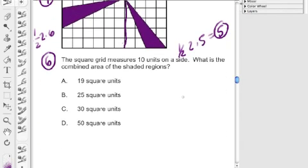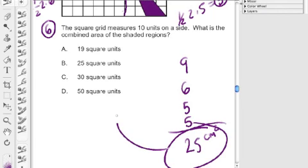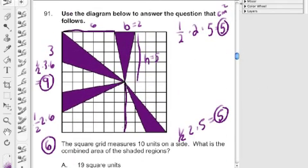Now if I add all these up I have nine, I have six, I have five and I have five, so the combined area of this shape gets us to 25 square units. So if it was centimeters it'd be centimeters squared. The answer here is B.